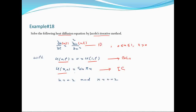X की value 0 से 1 तक है। X direction में step size h है जो 0.2 है और time level k है जो 0.02 है। अब इस heat equation को Jacobi iterative method की मदद से solve करना है।